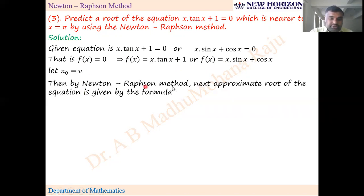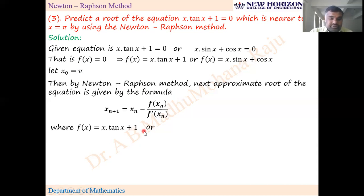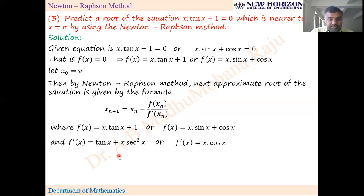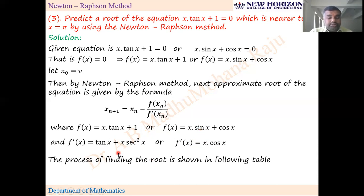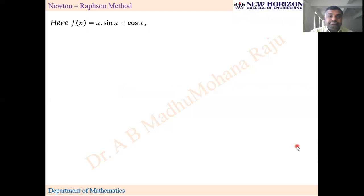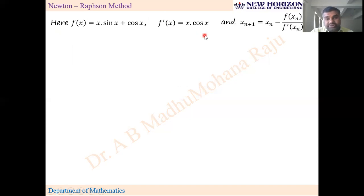Both forms of f(x) and f'(x) are shown — whichever you find convenient you may use. Since f'(x) = x·cos(x) is most convenient, use f(x) = x·sin(x) + cos(x) with f'(x) = x·cos(x). The process of finding the root is shown in the following table. Note that since the function has trigonometric values, keep your calculator in radians mode.